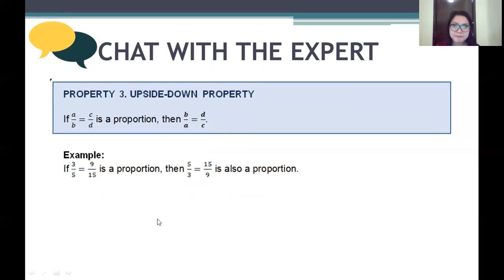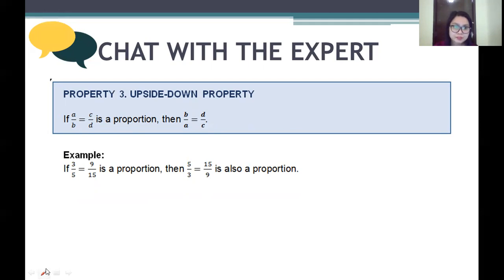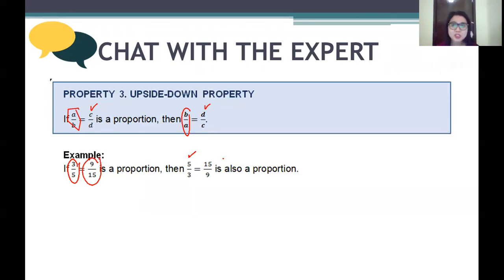Property Number 3 is the upside down property. You simply switch the numerator and denominator — that is, switch the means and extremes of the ratio. So if a over b equals c over d, then b over a equals d over c. Example: 3 over 5 equals 9 over 15; switching gives 5 over 3 equals 15 over 9. That is the upside down property.